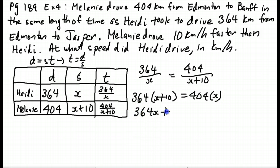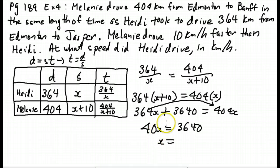364x plus 3640 is 404x. Let's move this over. Subtract 364 from 404, which will give us 40. So 40x is equal to 3640. x is 3640 divided by 40, which works out to 91.